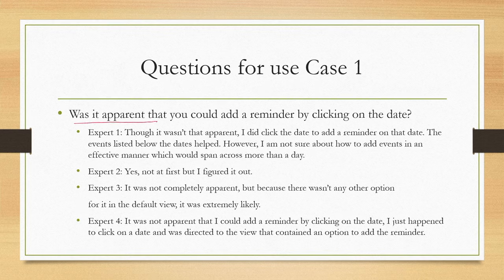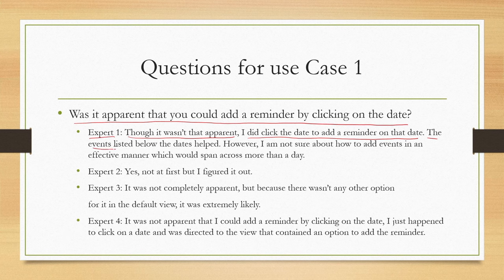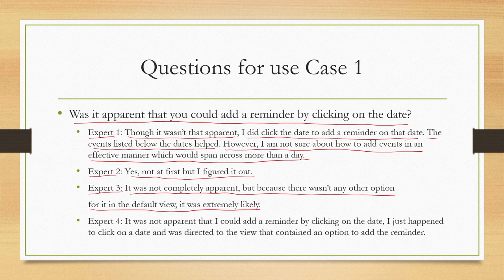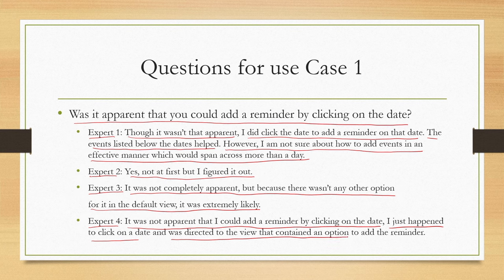Another question: was it apparent that you could add a reminder by clicking on the date? Expert 1 said not very apparent but clicked the date anyway; events listed below helped. Expert 2 figured it out eventually. Expert 3 said not completely apparent but there was no other obvious option. Expert 4 said it was not apparent — they found it by accident. The overall intuitiveness of adding a reminder appears low.